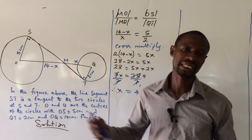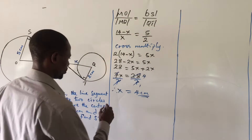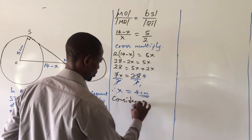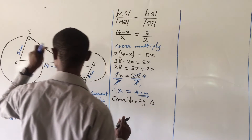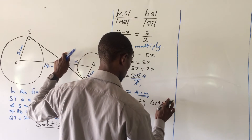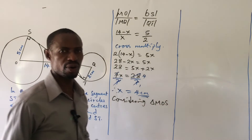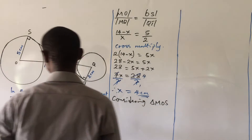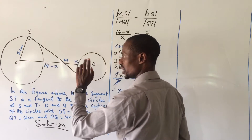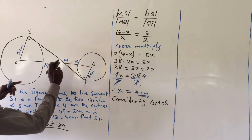Considering triangle MOX: since it is a right angle triangle, OX is the hypotenuse — the longest segment. We apply the Pythagoras formula: MO squared equals OX squared plus MX squared.